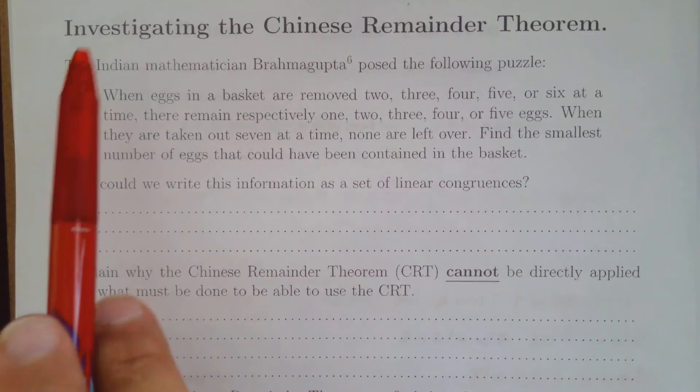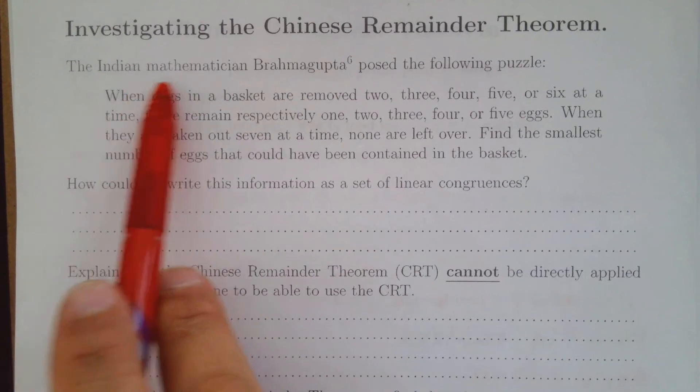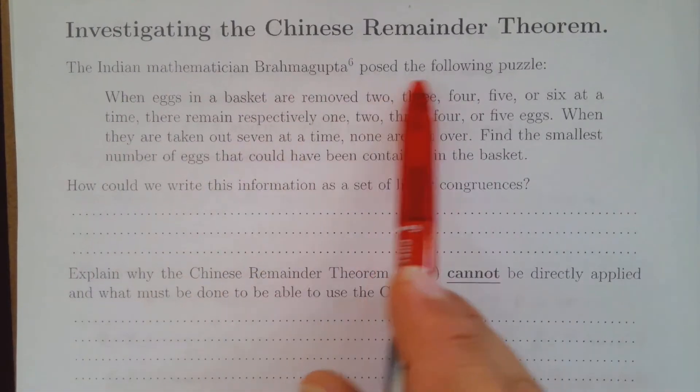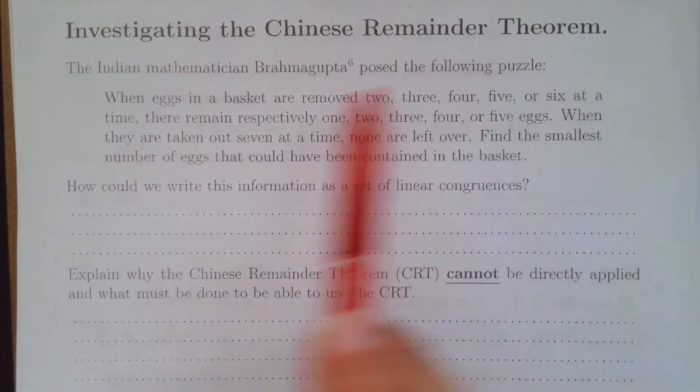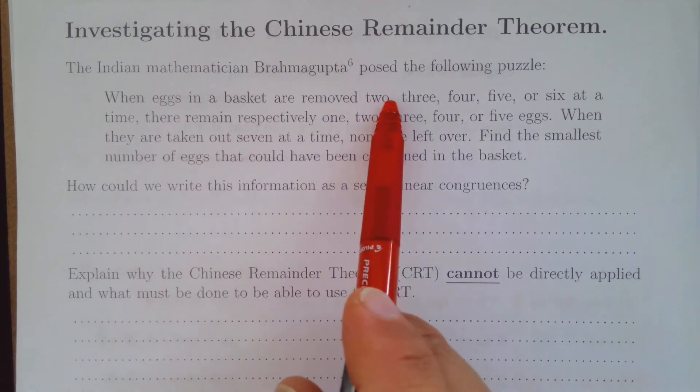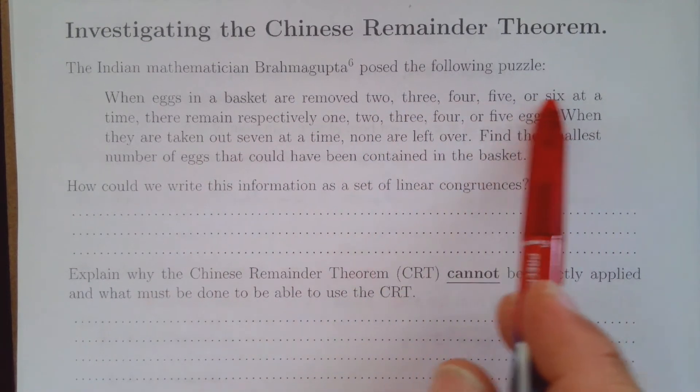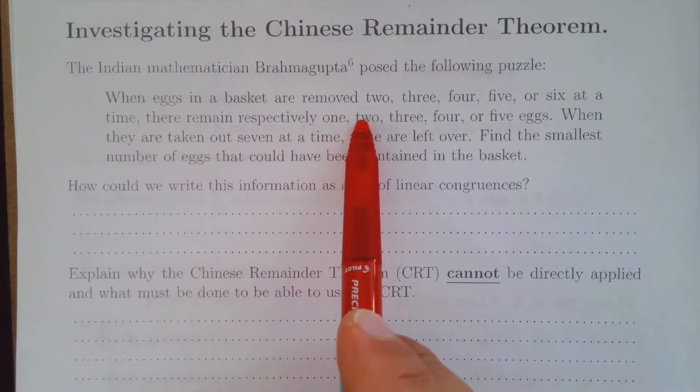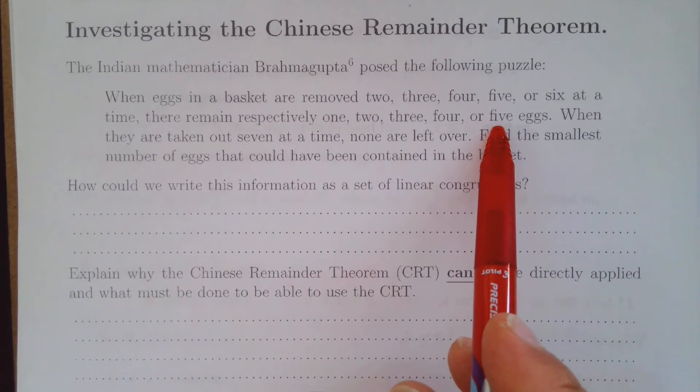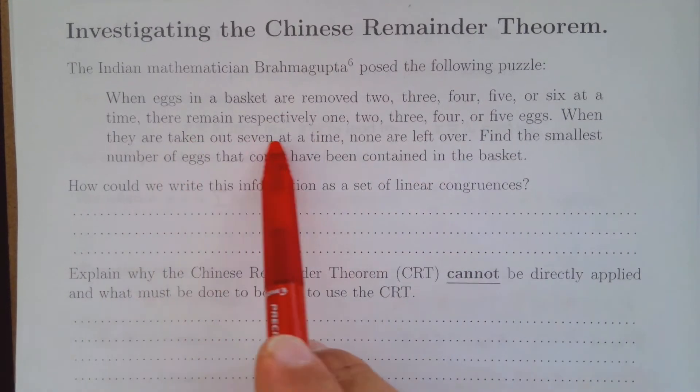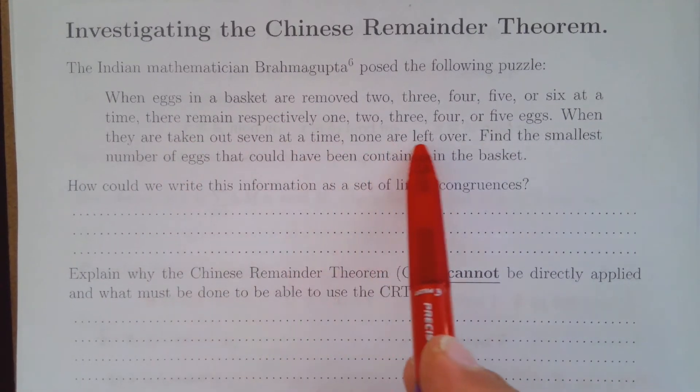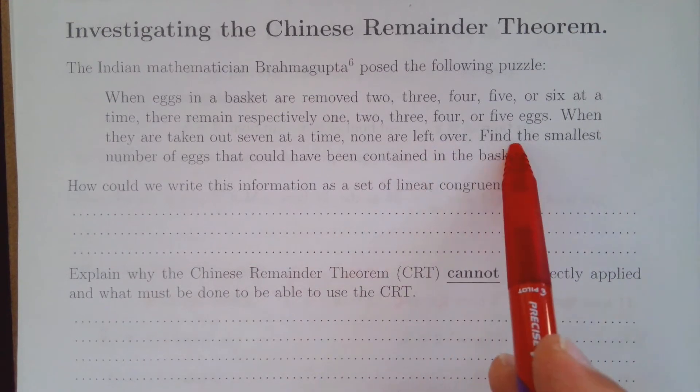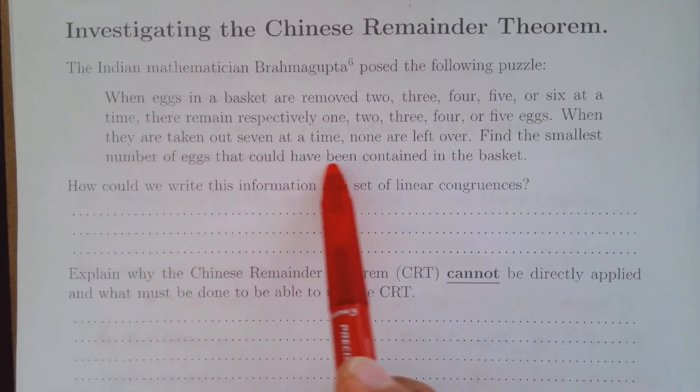The Indian mathematician Brahmagupta posed the following puzzle: When eggs in a basket are removed two, three, four, five, or six at a time, there remain respectively one, two, three, four, or five eggs. When they are taken out seven at a time, none are left over. Find the smallest number of eggs that could have been contained in the basket.